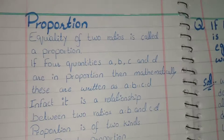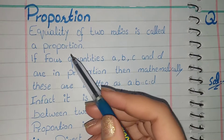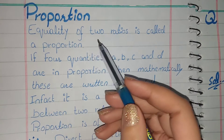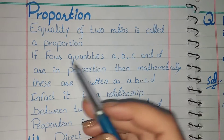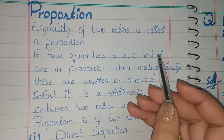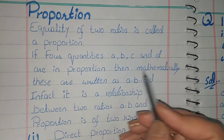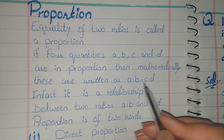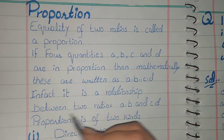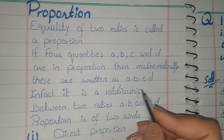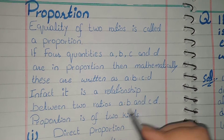What is the definition of proportion? The proportion of two ratios is a relation between two ratios. If there are four quantities A, B, C and D which are in proportion, this is called proportion.